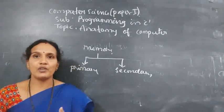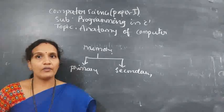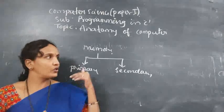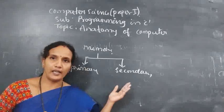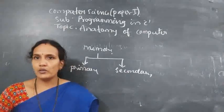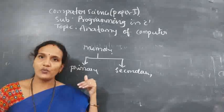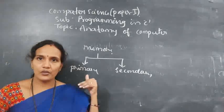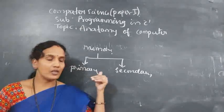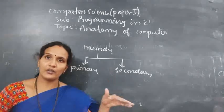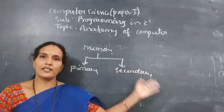Primary memory holds whatever information you are currently working on — all the files you are currently executing should be in primary memory. The size of primary memory is very less compared to secondary memory. Secondary memory is bigger and you can store a large volume of data in it. When there is no power, whatever content you saved inside primary memory will be lost. But even if there is no power, whatever content you saved in secondary memory will remain. I will discuss this in detail in the next class.